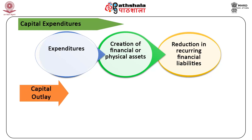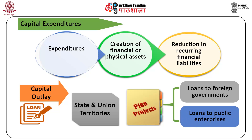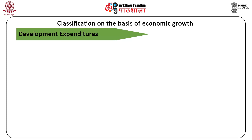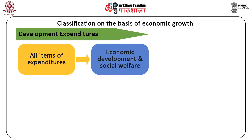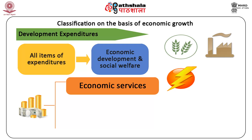Capital expenditures include capital outlays, loans to states and union territories for financing plan projects, loans to foreign governments and loans to public enterprises. Another classification of government expenditures is based on economic growth. On this basis, government expenditures are divided into development expenditures and non-development expenditures. Development expenditures include all items of expenditures that directly promote economic development and social welfare. They include spending on economic services, agriculture, industry, energy, communication, transport, science, technology and environment.